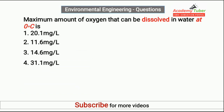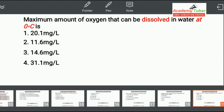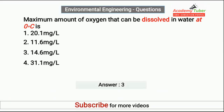Maximum amount of oxygen that can be dissolved in water at 0 degrees centigrade? The answer is 14.6 mg per litre.